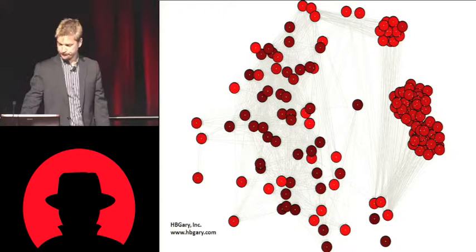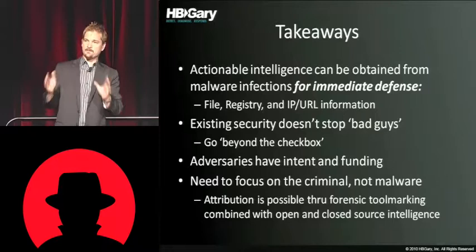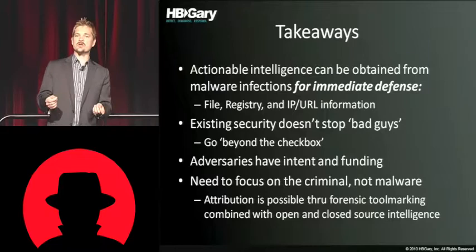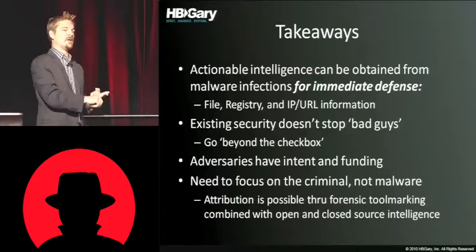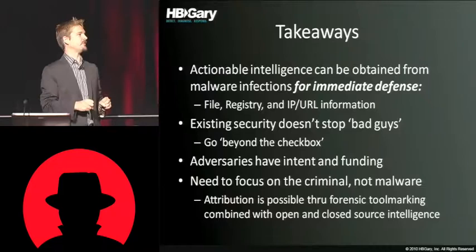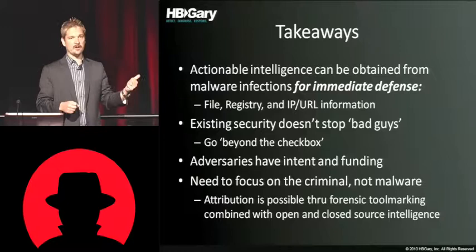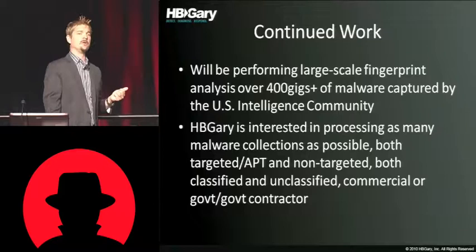What are your takeaways? Using the idea of attribution — bringing things back to the developer — ultimately means you can do better intrusion detection. It makes your existing security infrastructure that you've already invested in smarter. If you can take things out of the host and use them at the perimeter, you're winning, especially if they have long-term efficacy. By that I mean don't use the DNS name — use the command and control protocol itself, strip the DNS out, look for file registry, etc. Obviously the current check-the-checkbox approach is not sufficient to stop attackers. They have intent, they have funding, they're dangerous, so we need to focus on them and stop focusing so much on the malware itself. We have about 400 gigabytes of malware we have not yet processed from the intelligence community.